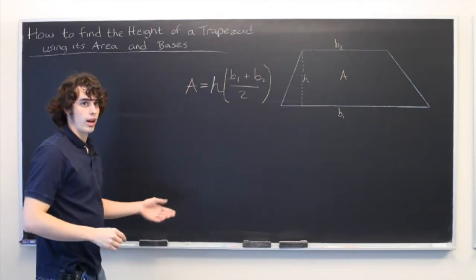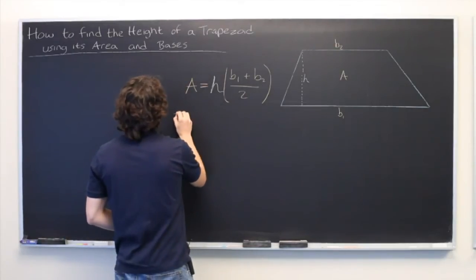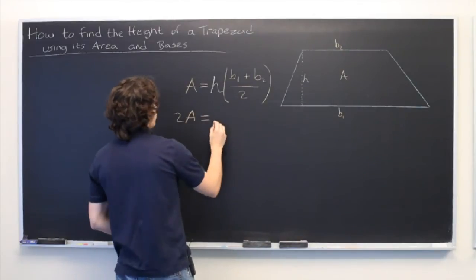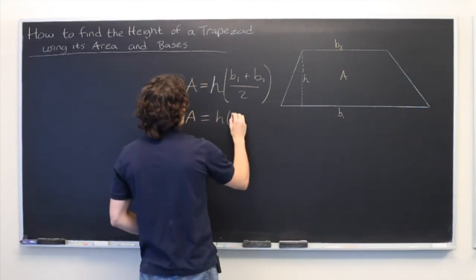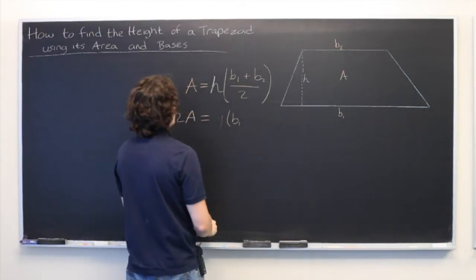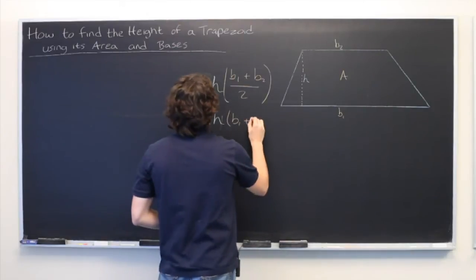But let's rewrite this and solve for H. That way we have an explicit formula. So first, multiply on both sides by 2. So we get 2A equals H times B1 plus B2.